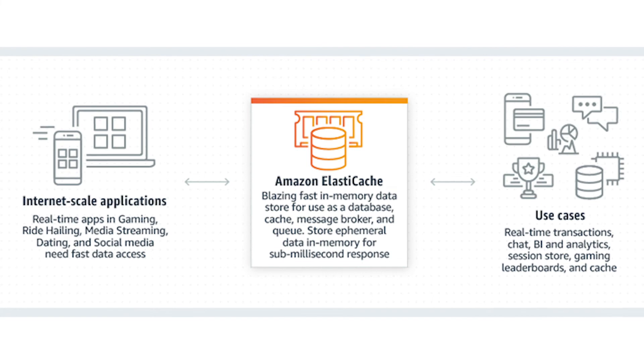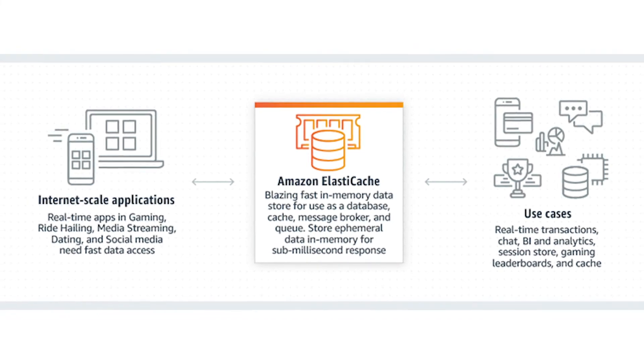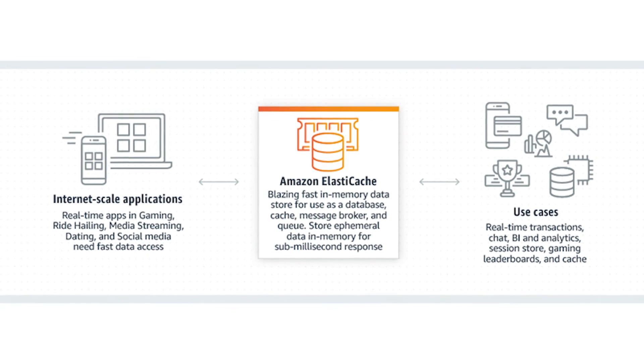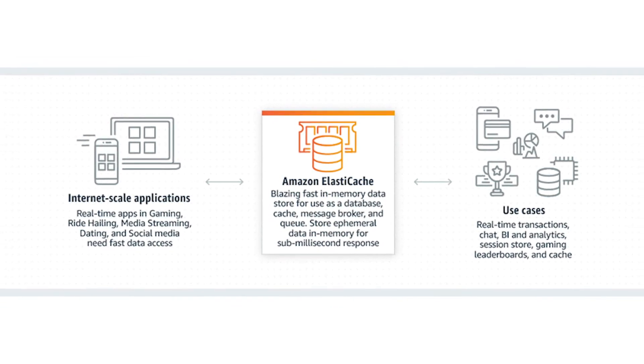Then there are in-memory databases. Financial services, e-commerce, web, and mobile applications have use cases such as leaderboards, session stores, and real-time analytics that require microsecond response times and can have large spikes in traffic at any time. We built Amazon ElastiCache, offering Memcached and Redis, to serve low-latency, high-throughput workloads that cannot be served with disk-based data stores. Amazon DynamoDB Accelerator, or DAX, is another example of a purpose-built data store. DAX was built to make DynamoDB reads an order of magnitude faster.